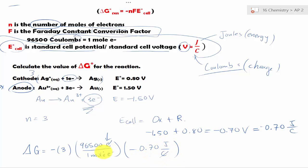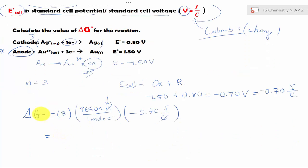That would be -0.70 joules over coulomb. So we have -0.70 joules over coulomb. And notice how coulomb cancels out. And the rest is pretty easy.